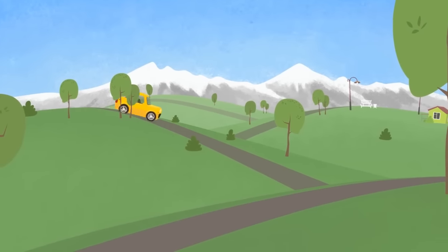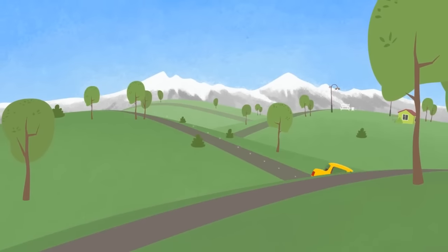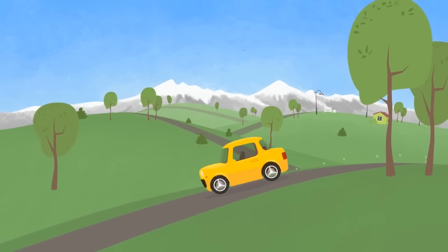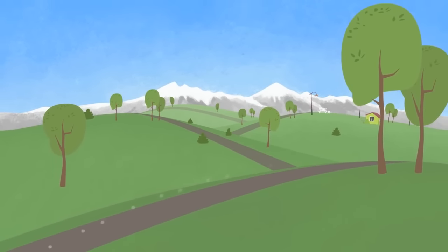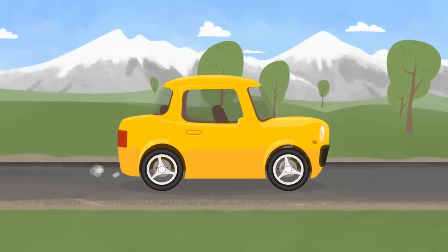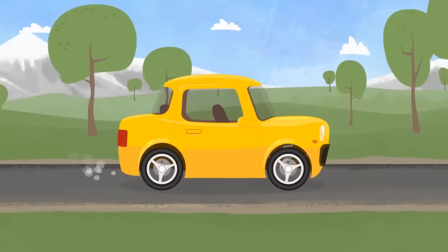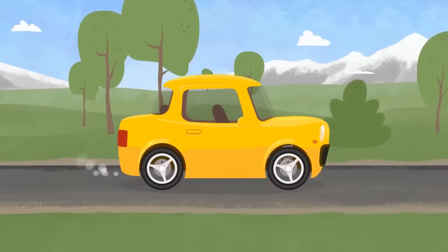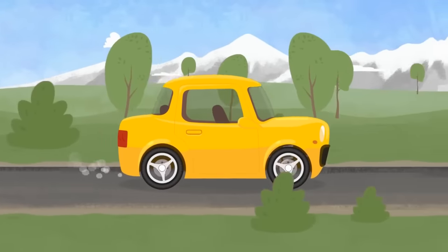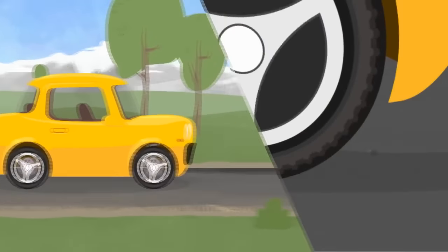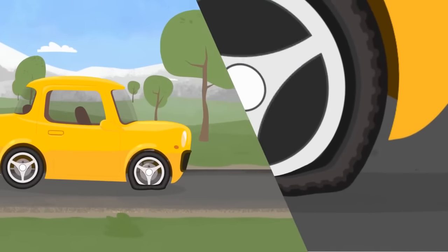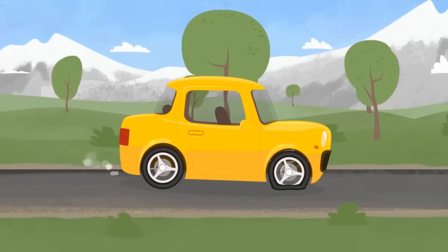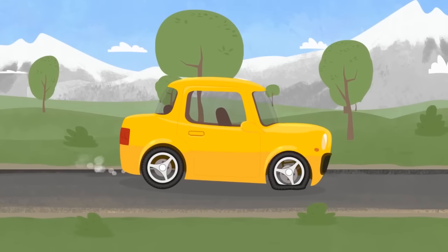Look! A small yellow car is having fun driving up and down the hills. Dear little car, be careful. Always look ahead on the road. Oh, see! There's a nail in front of you. The little car didn't notice it. And now its wheel is damaged.